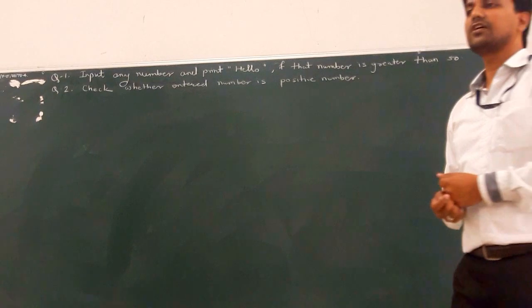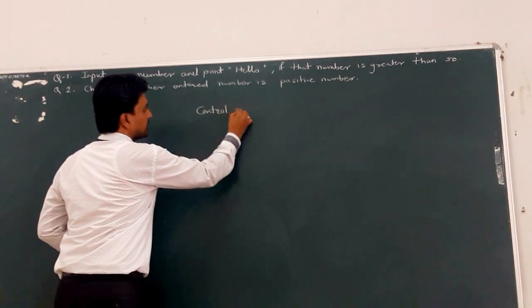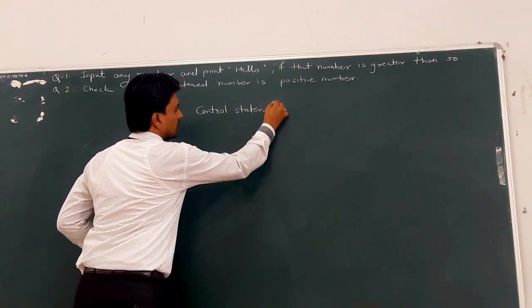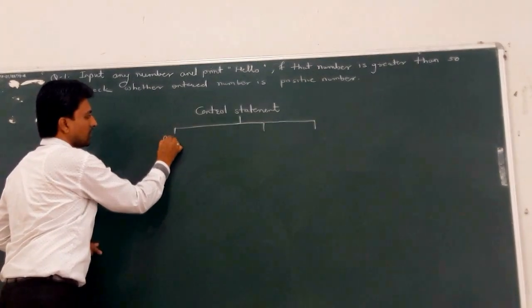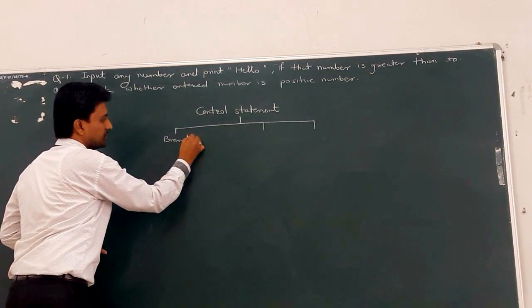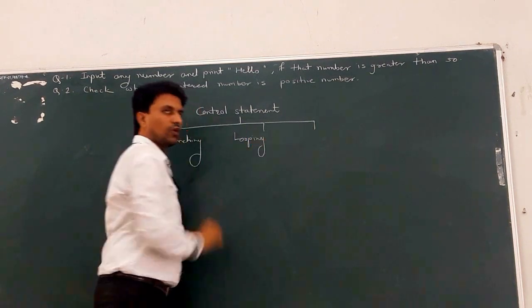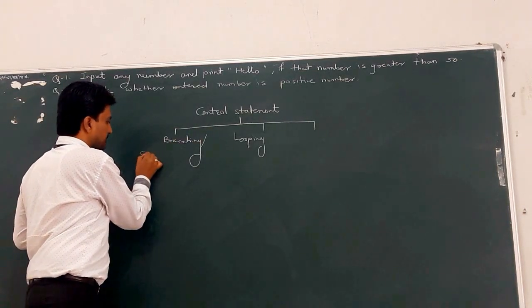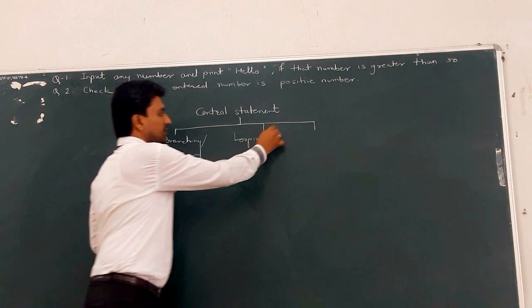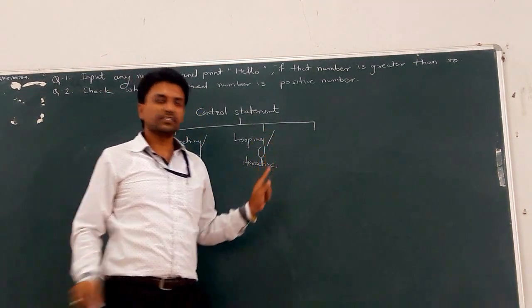Today we will see the next chapter, that is control statements. Basically, the control statement chapter is divided into three parts. First is branching statements, next is looping statements, also called iterative statements. Branching statements are also called selection statements, and the third type is jumping statements.